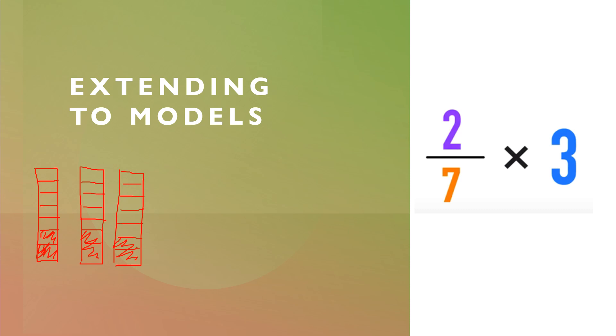Now you see that I have 2 out of 7 shaded, and there are 3 groups of them. So now, in order to find the answer, we can manipulate the pieces and move these two pieces over here. And I'm going to move these two pieces over here.